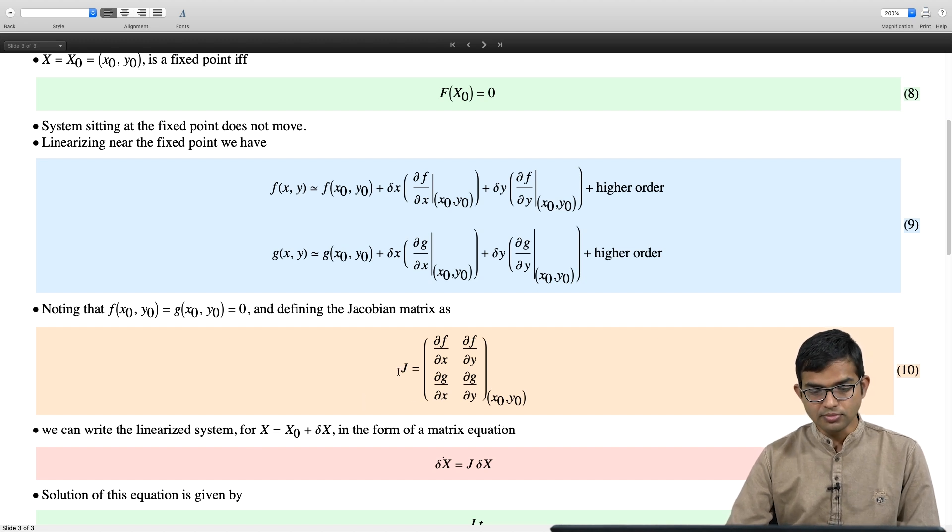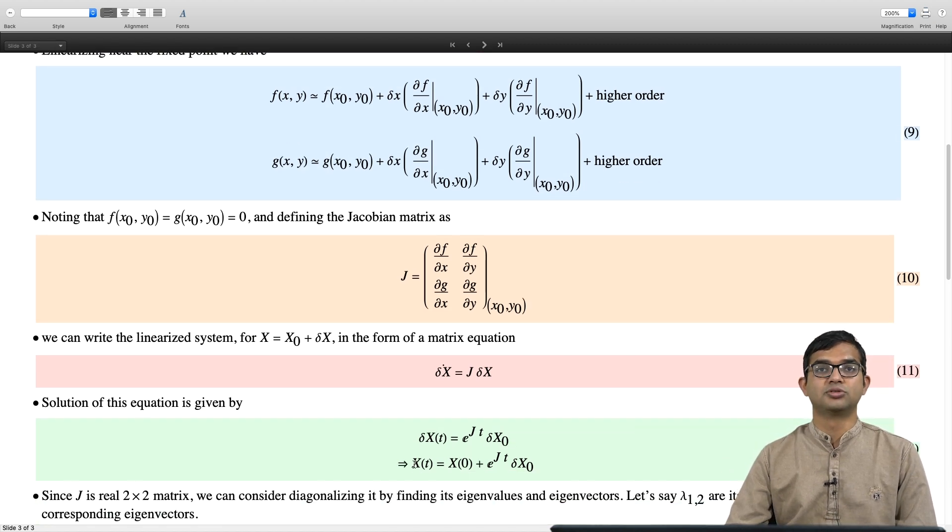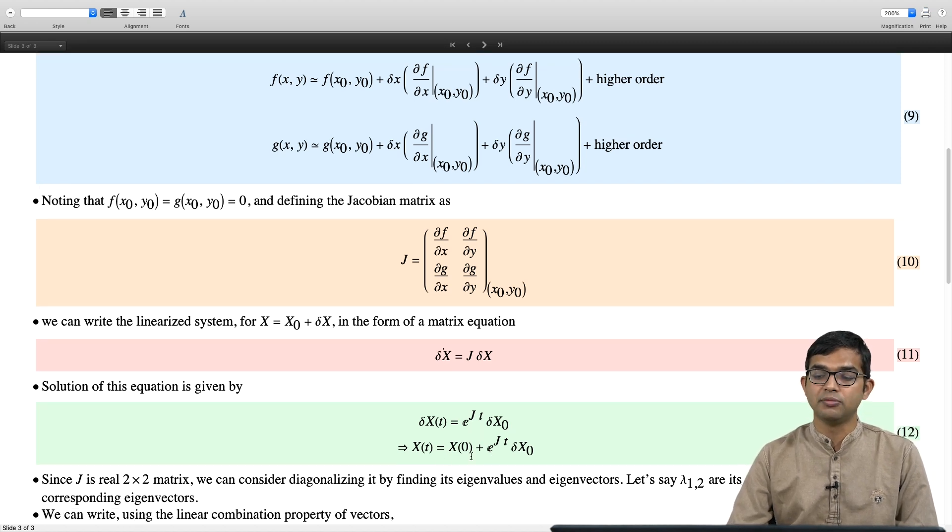For this linearized system, you have x equal to x not plus delta x and then you can ask what is the time evolution of this delta x. If you are slightly away from your fixed point, what will be the dynamics. It turns out that the solution is very similar. You can write a vector solution. Now, x of t is equal to x of 0 plus e to the j t, where j is now a matrix, this Jacobian times t times delta of x not.